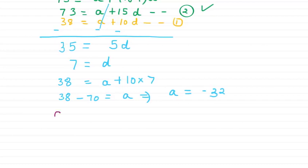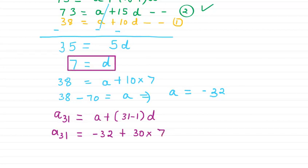Now we have to find our required term that is A31. For finding A31, we can use the same formula that is a plus 31 minus 1 into d. So here our a is minus 32 plus here we can write 30 into the value of d is 7. These two values we got from here.